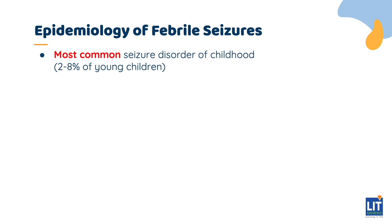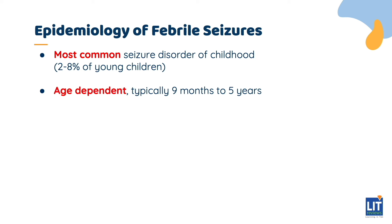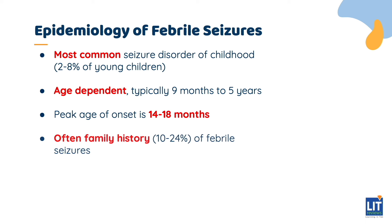Febrile seizures are the most common seizure disorder of childhood and occur in 2–8% of children by the age of 6. The variation in prevalence likely relates to different case definitions, demographic factors, and ascertainment methods. There is an age-dependent onset of febrile seizures, typically between the ages of 9 months and 5 years, with the peak age of onset being between 14 and 18 months. There is often a family history of febrile seizures, with 10 to 24% of patients having a first-degree family member with a history of febrile seizures.